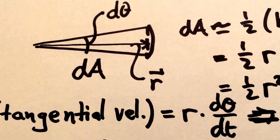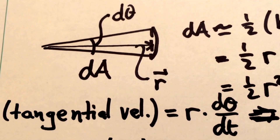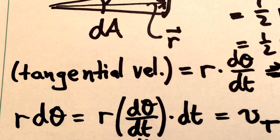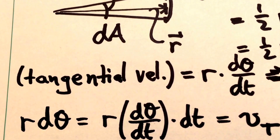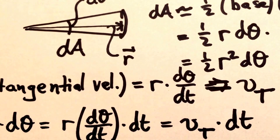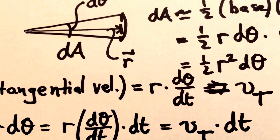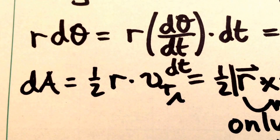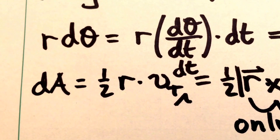The tangential velocity — that is, the component of the velocity vector which points tangent to the radius vector — is r times dθ/dt. So r times dθ is really just r times dθ/dt times a little amount of time dt, which is the tangential velocity again. So the base of the triangle is really just the tangential velocity times dt, the short amount of time during which the planet is in motion. We can rewrite that little area dA as one half r times the tangential velocity times dt.